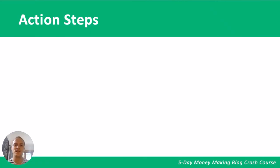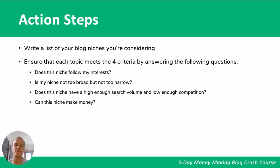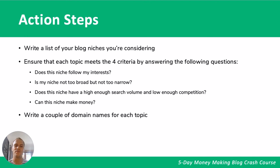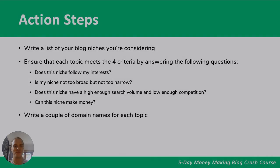Now for the action steps you can take after watching this video. Go ahead and write a list of blog niches you're considering — what topics are you passionate about and interested in? Ensure each topic meets the four criteria: does it follow your interests, is it not too broad or too narrow, does it have high search volume and low competition, and can it make money? After that, write down a couple of domain names for each topic you have in mind. I hope you enjoyed this video on how to choose your blog name and niche. We'll have worksheets below to help guide you through these action steps. Take care and I'll see you in the next video!